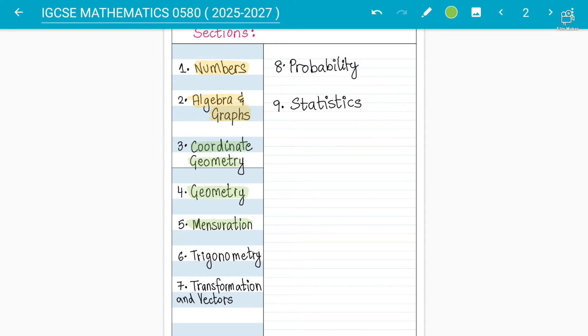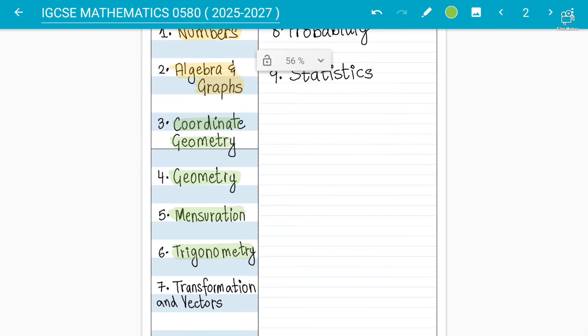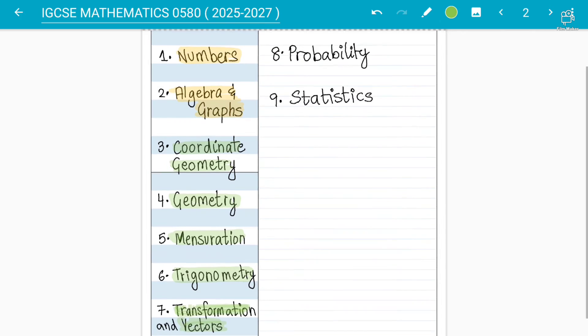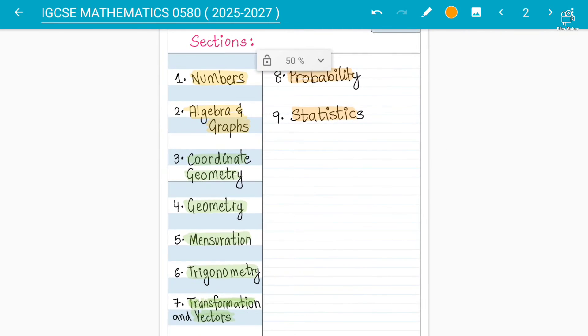Mensuration is all about area, perimeter, volume, surface area. Trigonometry is about the sine rule, cosine rule, 3D shapes, area with the base and those things. We have transformations and vectors as the common topic from a lot of time, nothing changed in that. And then we have probability and statistics in which we have to discuss about cumulative frequency, histograms, bar graphs, pie charts and those things.